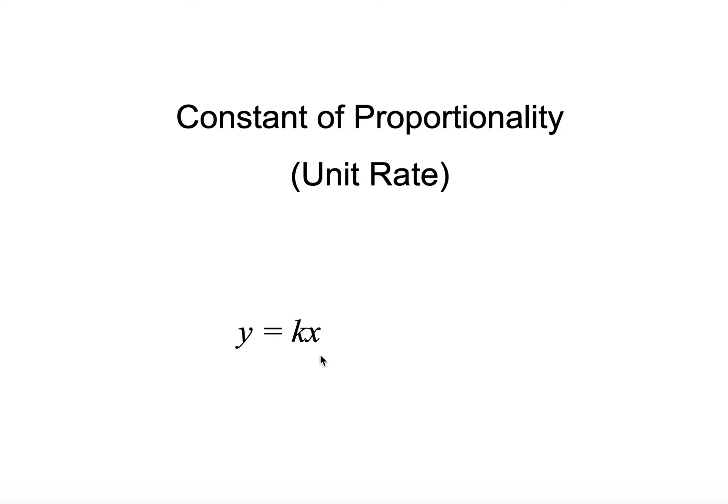It's just a fancy way of saying unit rate. But first, let's look at this equation here. What it is, is the fancy name for this equation is a direct variation. Because what we put into the equation, we're always going to get the same type of answer. So it's called a direct variation.